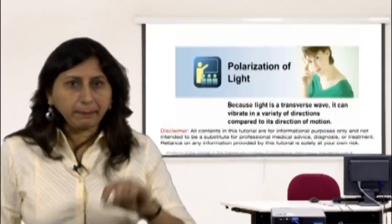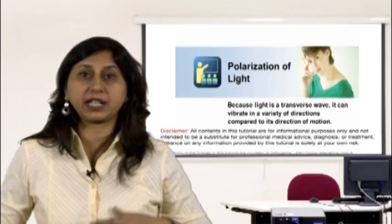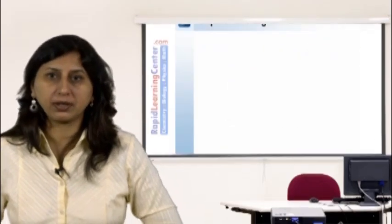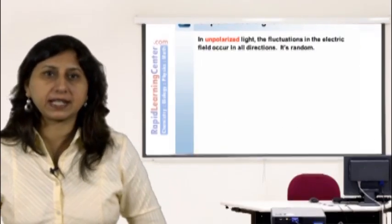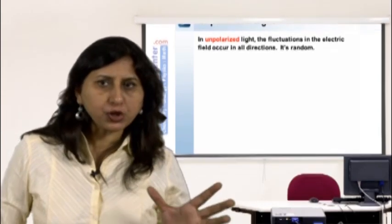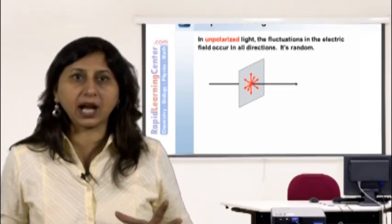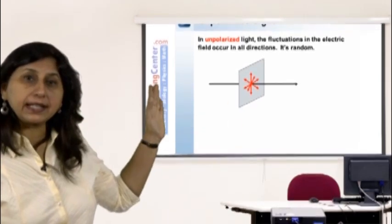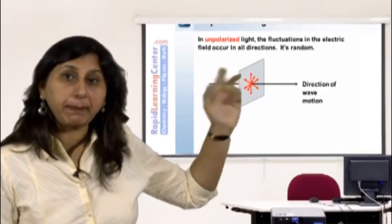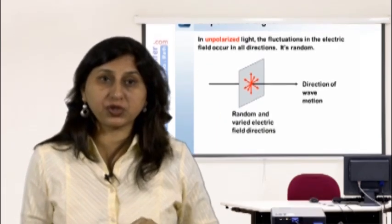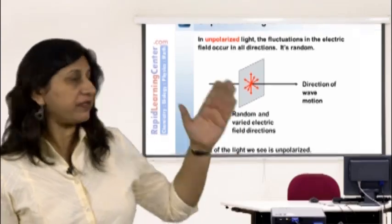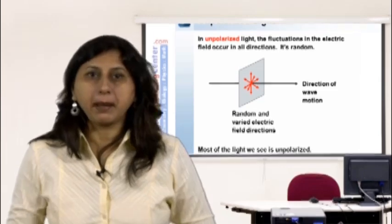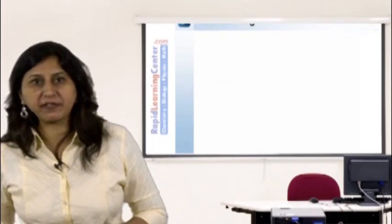Polarization of light: because light is a transverse wave, it can vibrate in a variety of directions compared to its direction of motion. In unpolarized light, the fluctuations in the electric field occur in all directions randomly — the light beam travels one way but the electric field fluctuations occur in many directions. Most of the light we see is unpolarized.